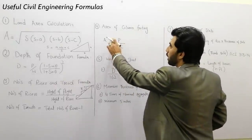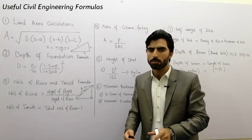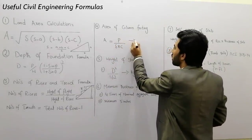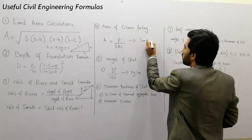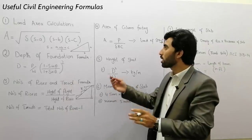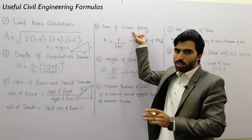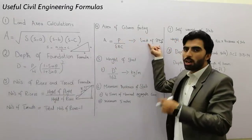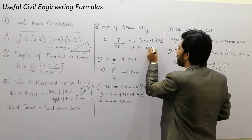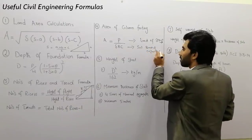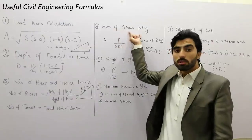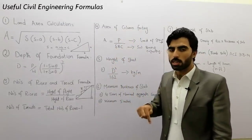The fourth formula is about area of column footing — how to find the area of a column footing. Area of column footing is equal to P divided by SBC, where P is the load of the structure on the column and SBC is the soil bearing capacity. The link is in the description of this video for more details on how to find area of column footing.